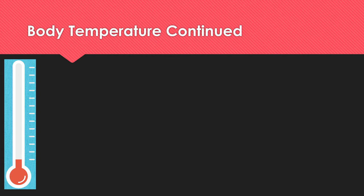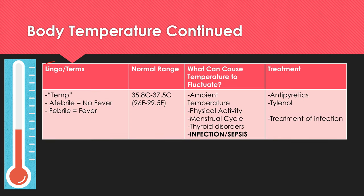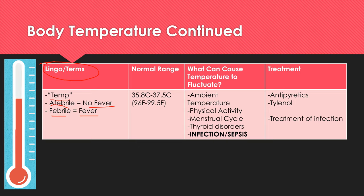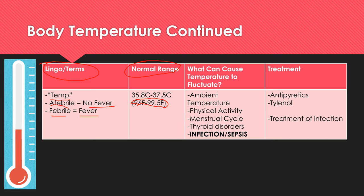Body temperature continued. Some important lingo: 'temp' is short for temperature; 'afebrile' means no fever; 'febrile' means you have a fever. Normal range can vary depending on how you're taking the temperature — tympanically it's between 35.8°C and 37.5°C. Anything greater than 37.5 doesn't mean you should panic, but you should watch the patient more closely as they could be brewing an infection.